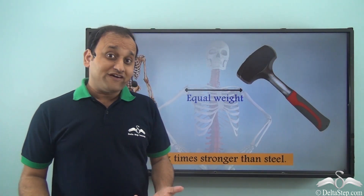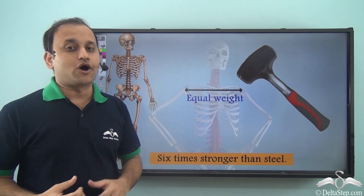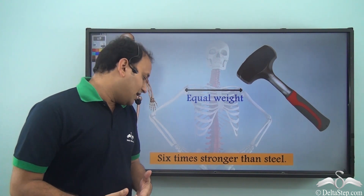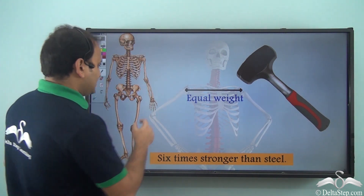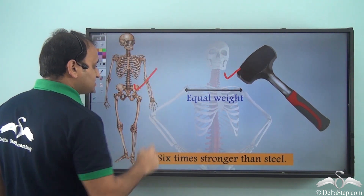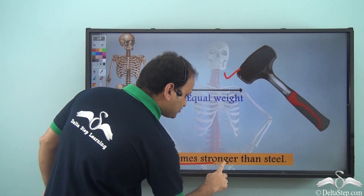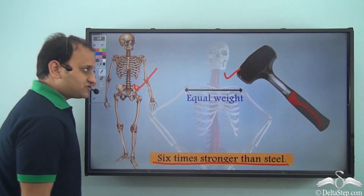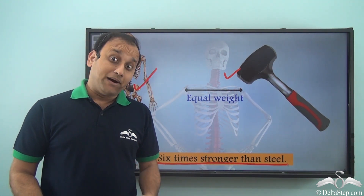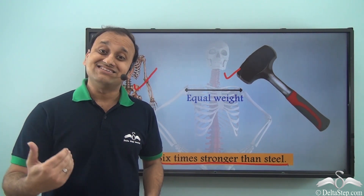Now, do you know a very interesting fact? Bones are very, very strong. If you compare equal weights of steel and bones, the bones are six times stronger than steel. So any steel thing you see may seem very strong and sturdy, but bones are six times stronger than steel.